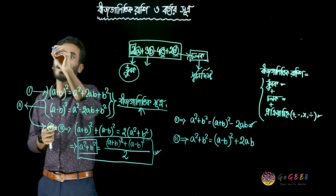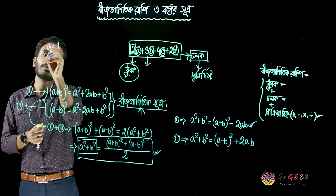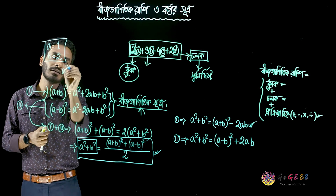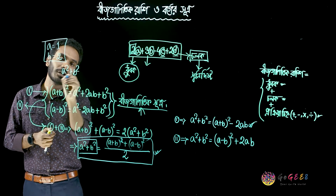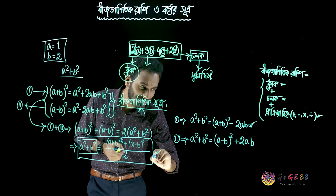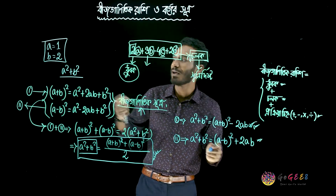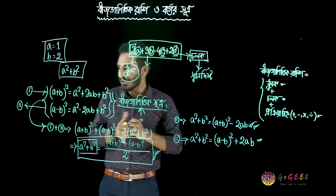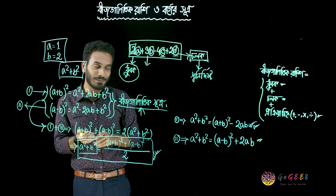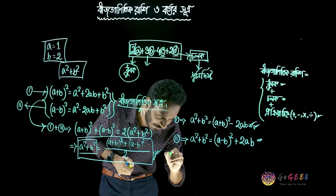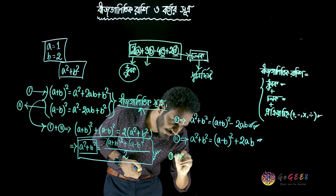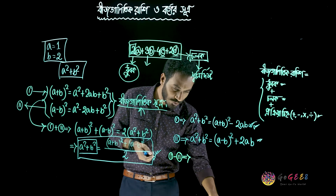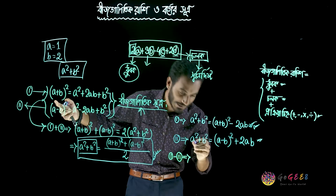A is greater than 1 and B is greater than 2. We have to write a squared plus b squared. So we'll try to reduce the 2 of this and 2 of this — 1 of this, 2 of this. We'll start the process.